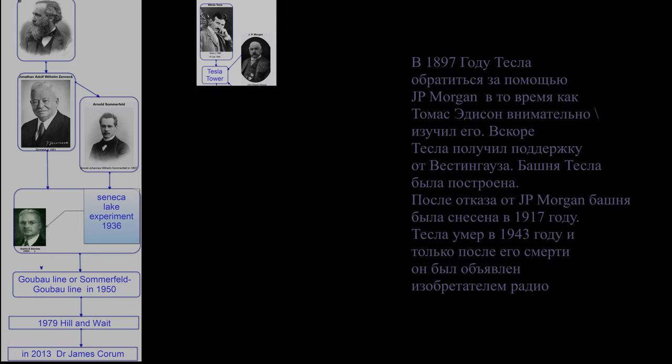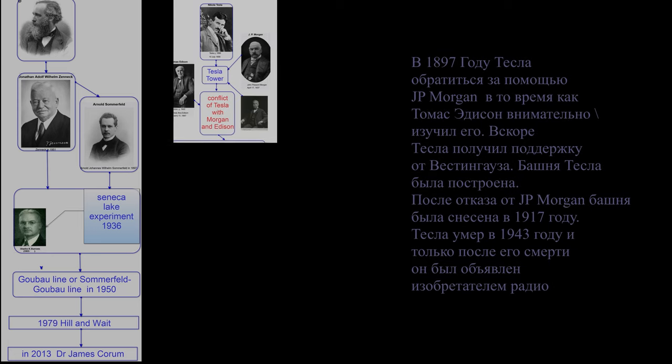In 1887 Tesla asked JP Morgan for help while scrutinized by Thomas Edison. Soon, Tesla got support from Westinghouse. The Tesla Tower was built. After rejection by JP Morgan, the tower was demolished in 1917.